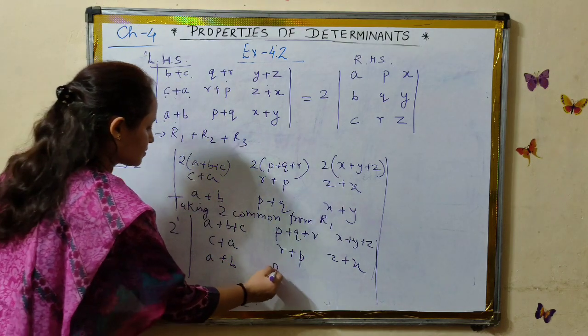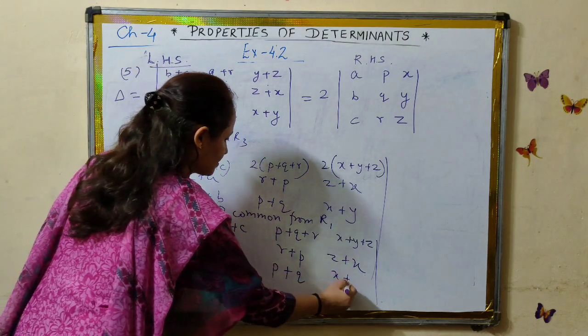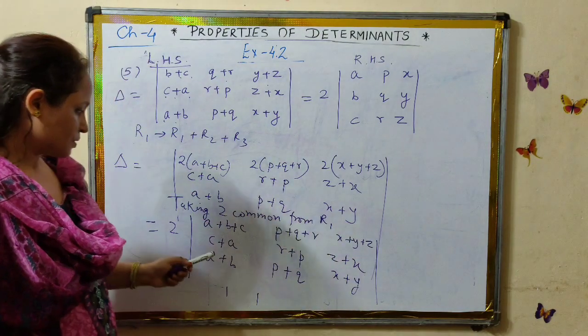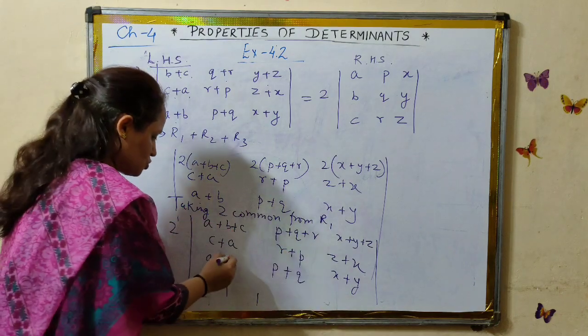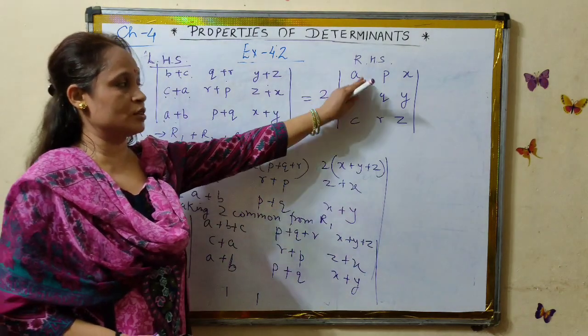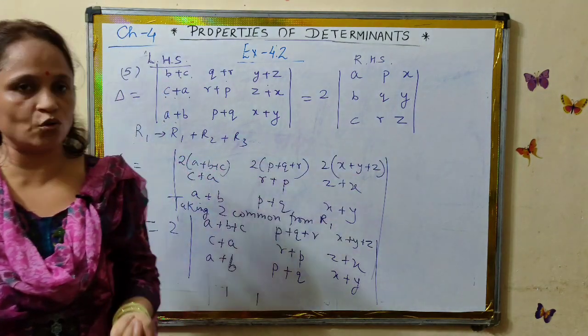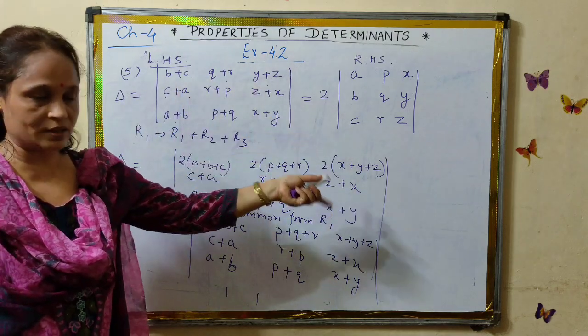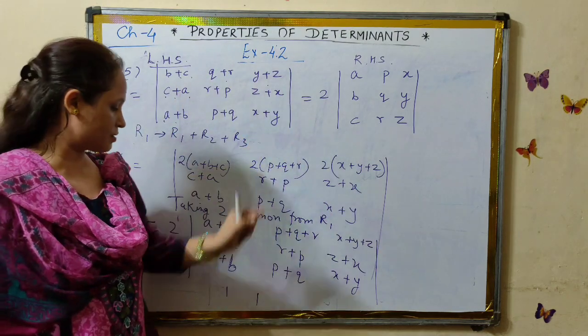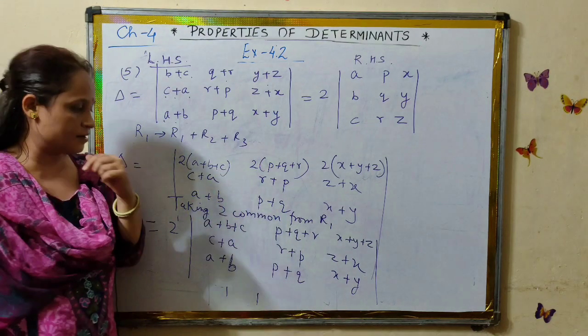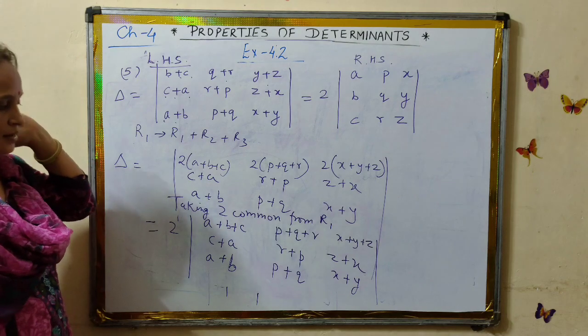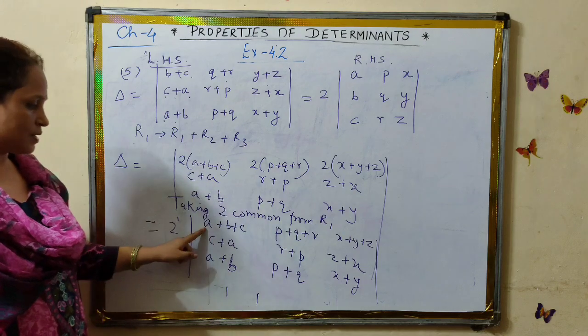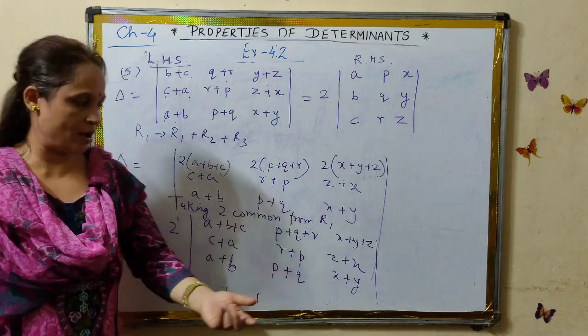And then you can see how the terms, the entries that we have, the elements that we have in the determinant. You can just see they have become like trinomials in the first row, binomials in the second and third row. But in the RHS we have all the elements as monomials. How can we make these trinomials and binomials turn into monomials?